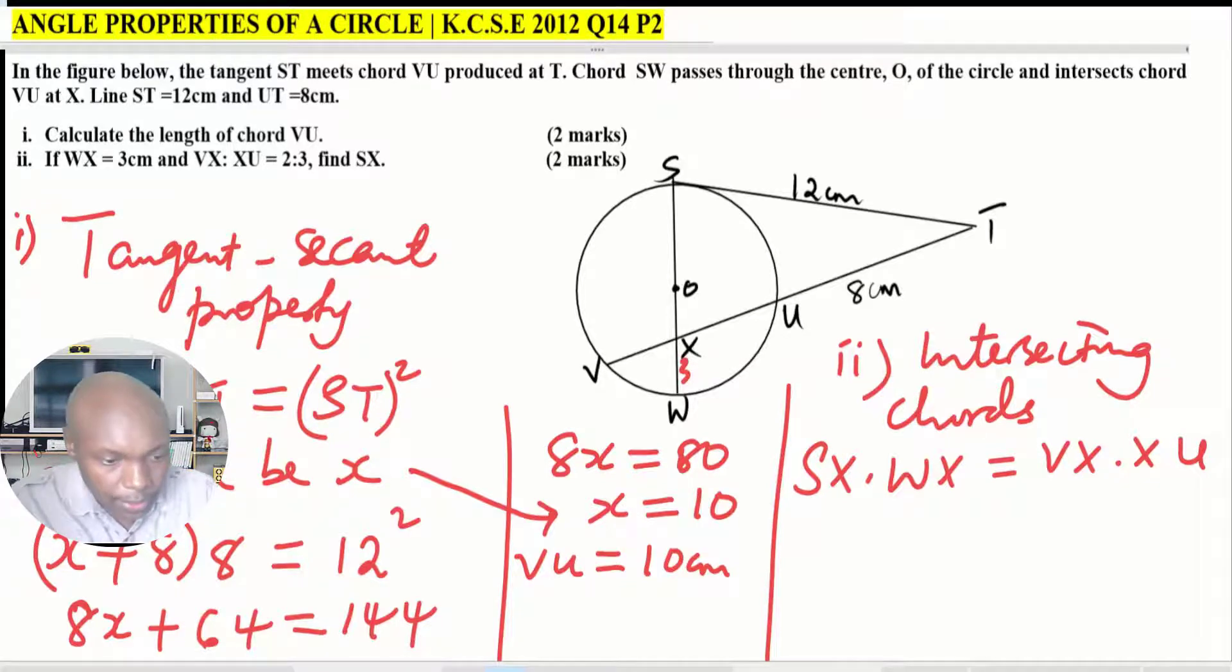We need to get VX and XU. Looking at this ratio that is given, we already have VU, which is being divided into that ratio 2 is to 3. To get VX, we use this ratio: VX will be 2 over 5 multiplied by 10, because the whole length VU is 10. This should give 4, so VX is 4.